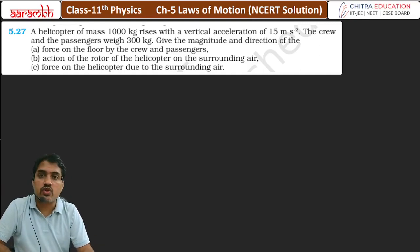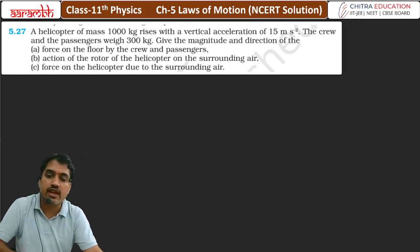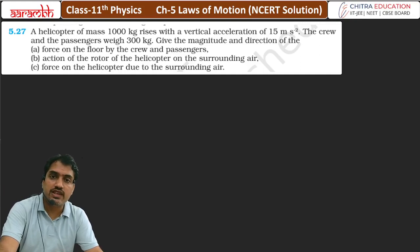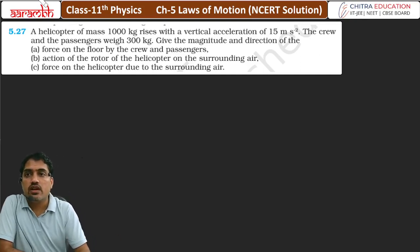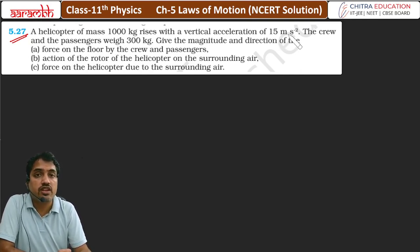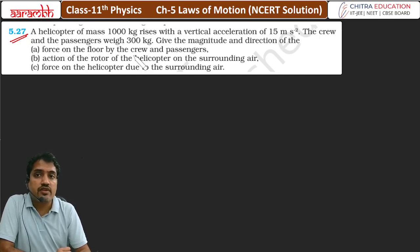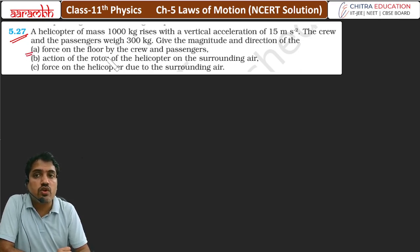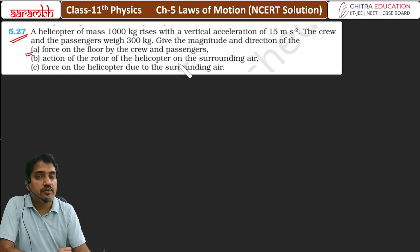Question number 57 mein given hai: helicopter of mass 1000 kg rises with vertical acceleration 15 meter per second squared. The crew and passengers weigh 300 kg. Give the magnitude and direction — first wala part hai — the force on the floor by the crew and passengers.